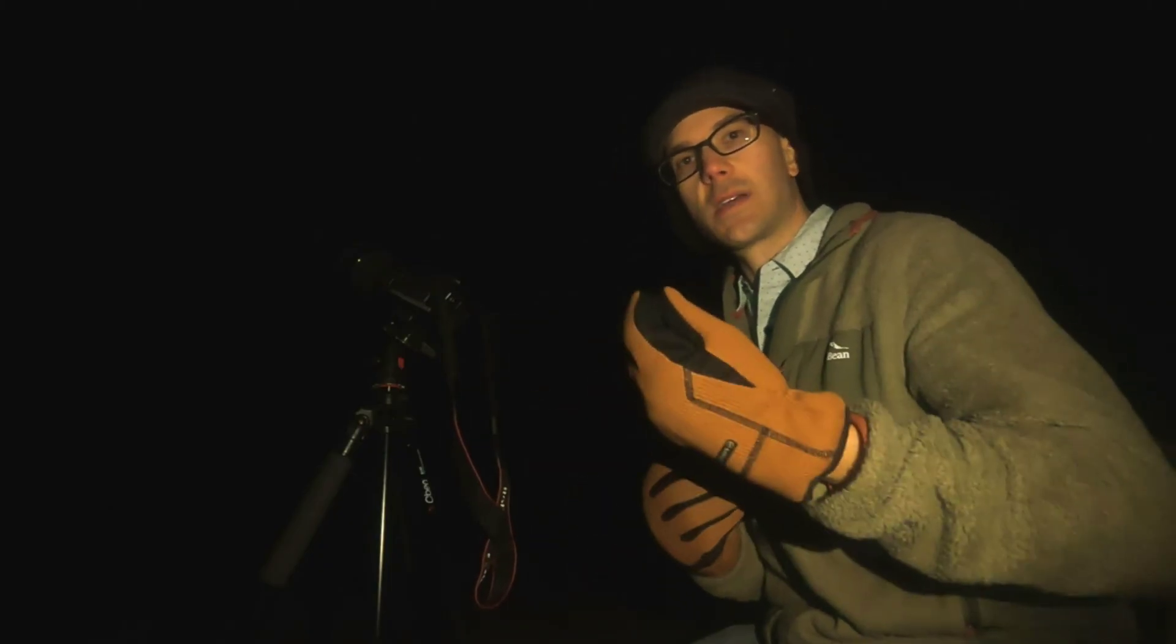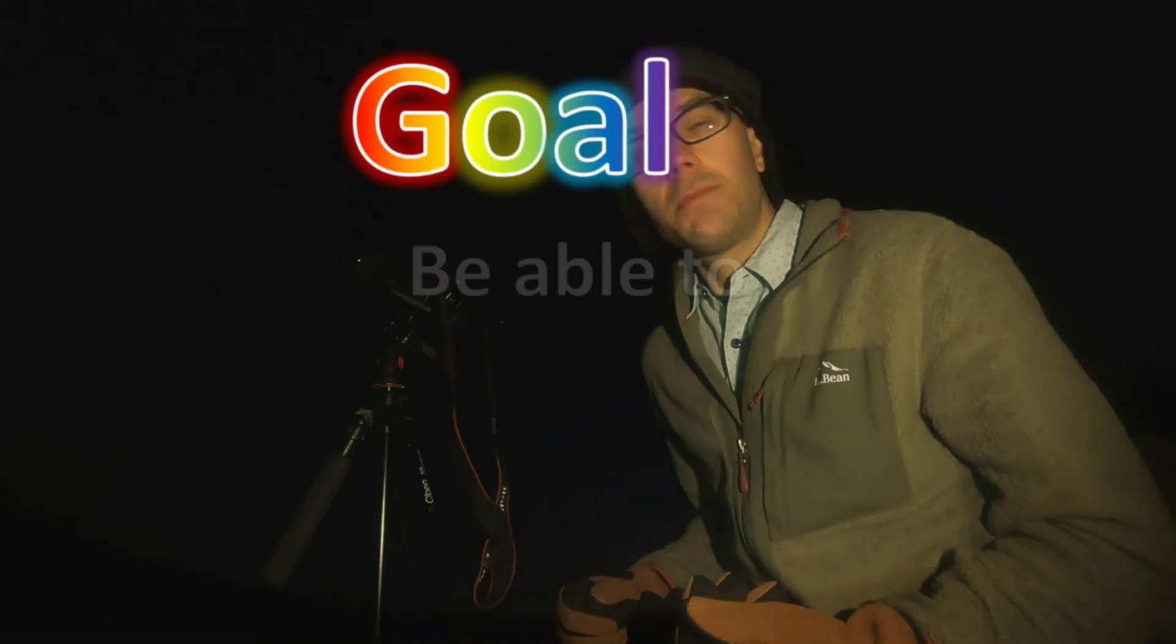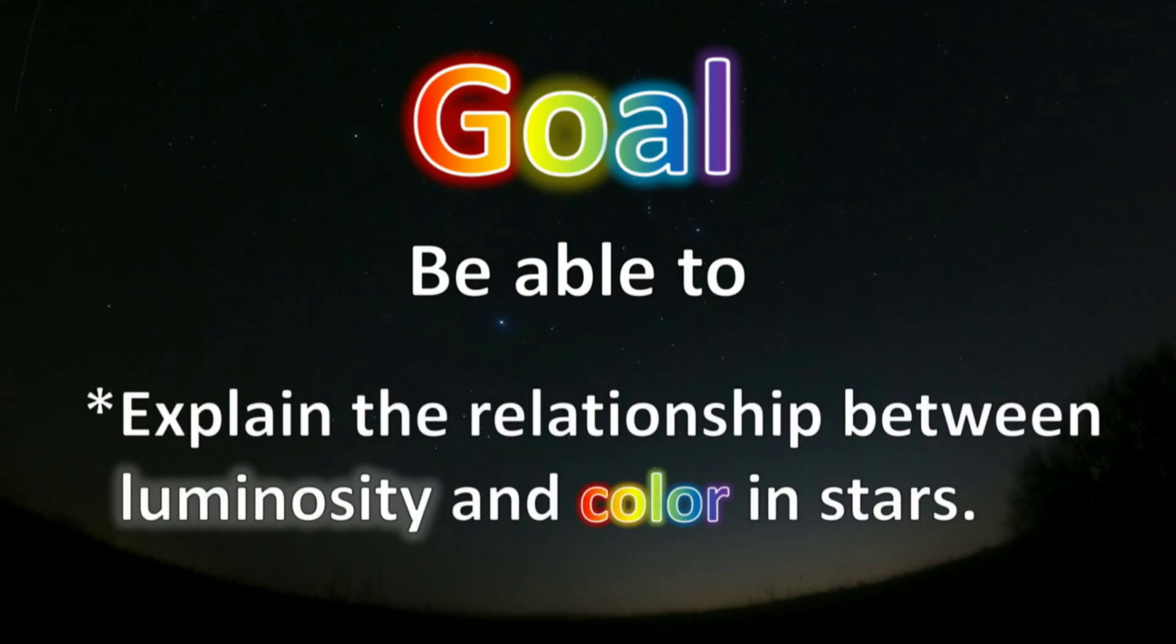Now, there are thousands and thousands of stars that are visible just to the naked eye. And there are millions and billions of stars visible through telescopes. And for each star, we can actually measure its brightness and its color. So with this huge amount of data that astronomers have been collecting over hundreds of years, we can actually kind of connect the dots and see if there's a relationship between a star's brightness and its color. If there is a relationship between those two, what is it? And that brings us to the goal of this video. After watching this video, you should be able to explain the relationship between luminosity and color in stars.